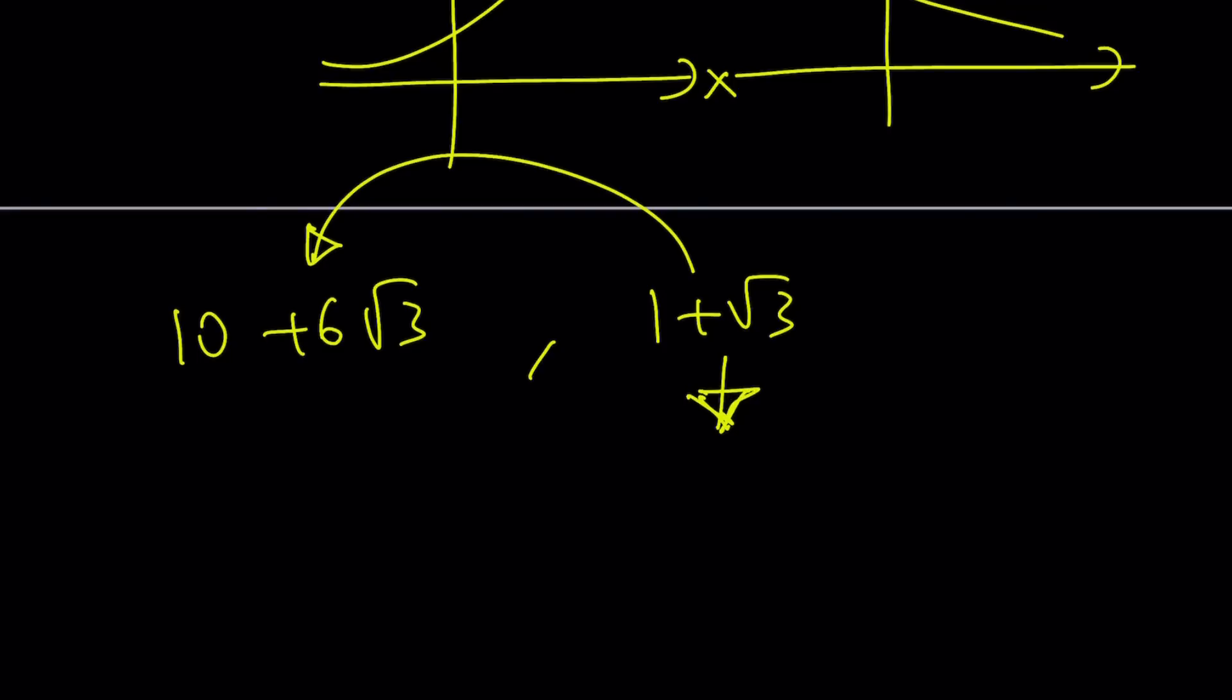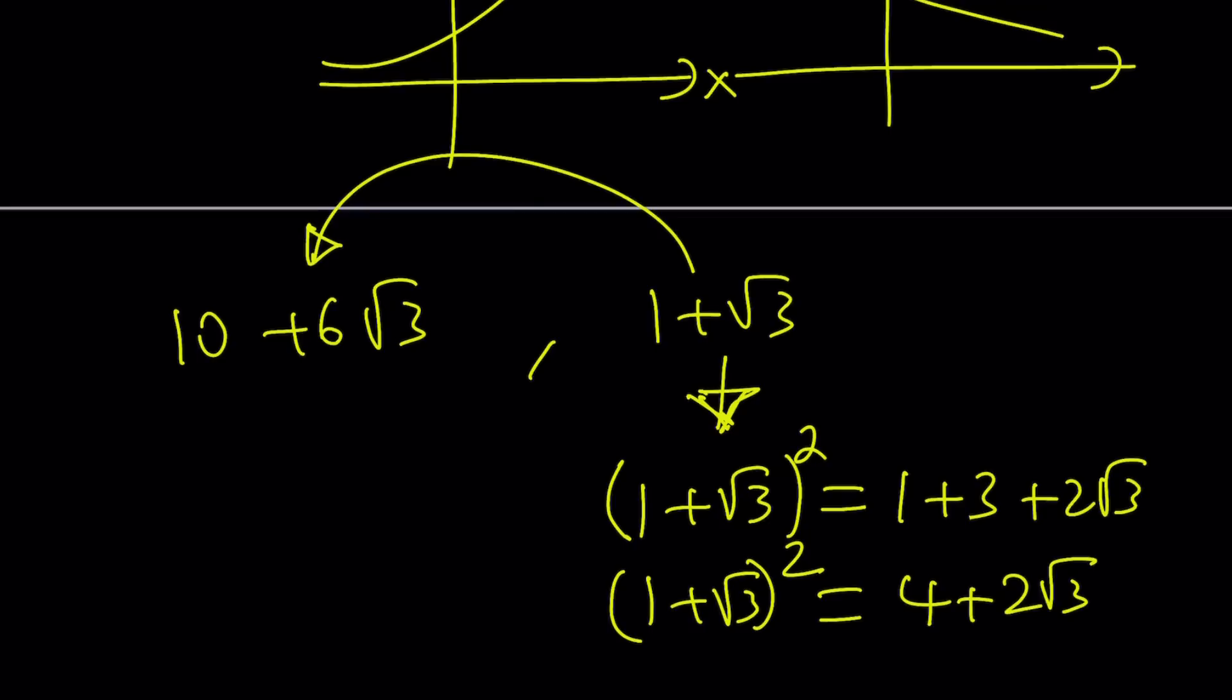We're going to raise this number to a power. How about square it? If you're looking at integer powers first power is going to give us the same thing. What happens if you square this number? a squared plus b squared plus 2ab and this is going to become 4 plus 2 root 3. So that's 1 plus root 3 squared and that didn't give us our number but we kind of gotten closer.